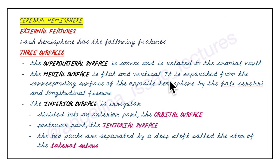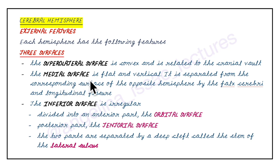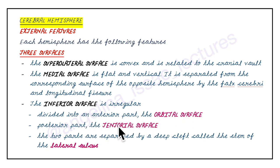To summarize the surfaces: the supralateral surface is convex and related to the cranial vault. The medial surface is flat and vertical, separated from the opposite hemisphere by the falx cerebri and longitudinal fissure. The inferior surface is irregular, divided into an anterior orbital surface and a posterior tentorial surface, separated by a deep cleft called the stem of the lateral sulcus.